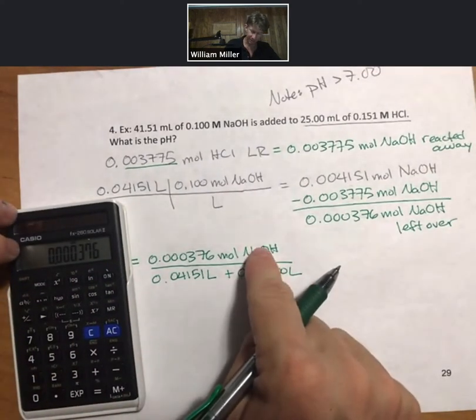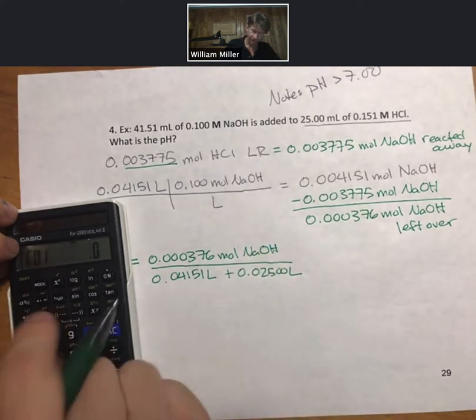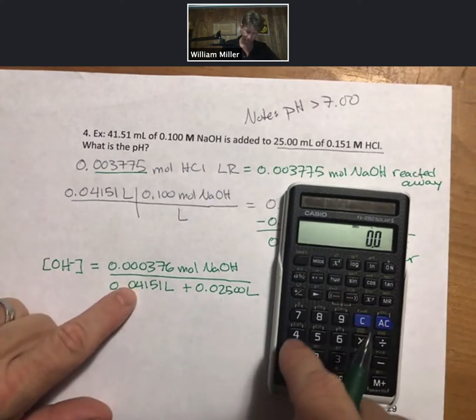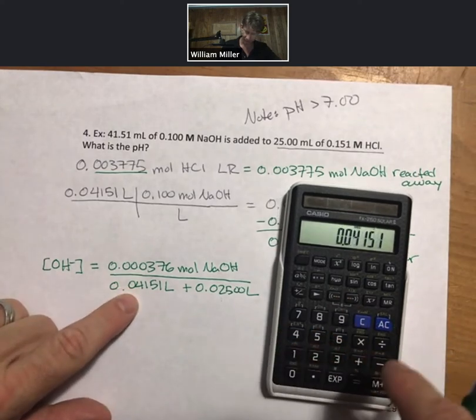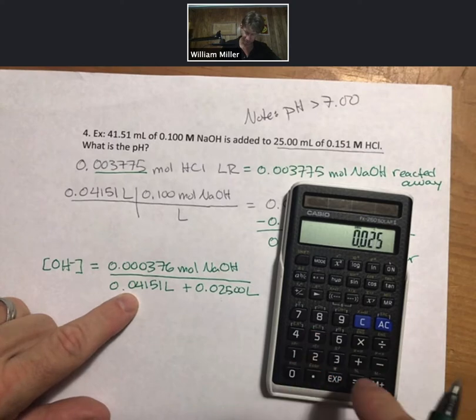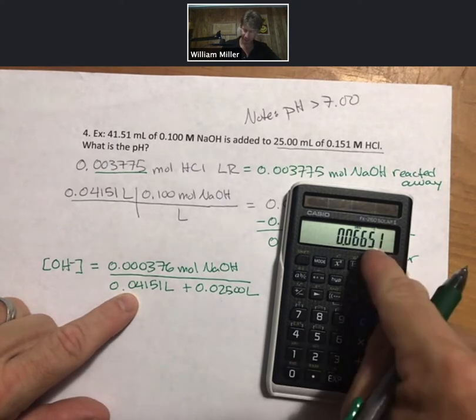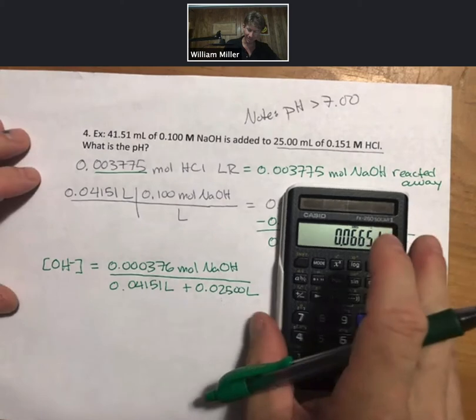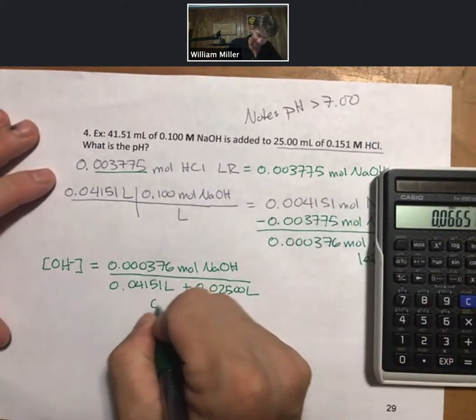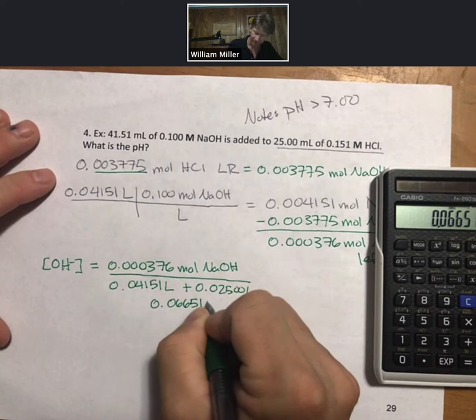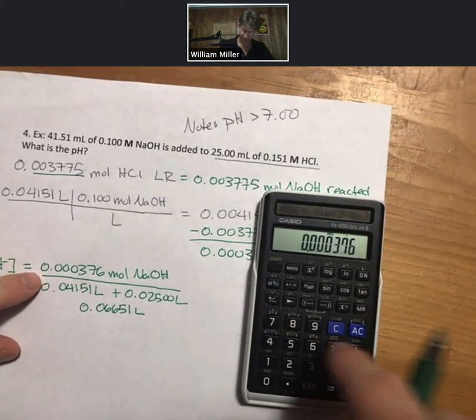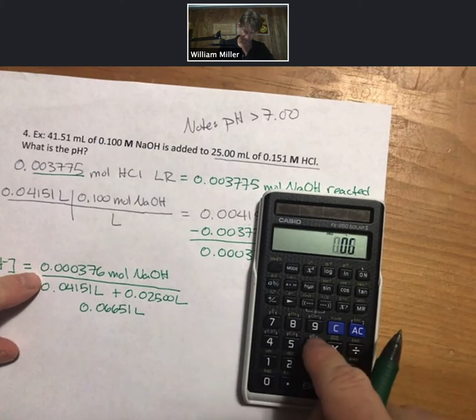So I have my moles in the numerator. I put my parenthesis 0.04151 plus 0.02500, close parenthesis. That adds up my denominator for me, hit equal sign. I forgot to hit divide, so let me write down that result and I'll do it all again. 0.000376 divided by 0.06651.